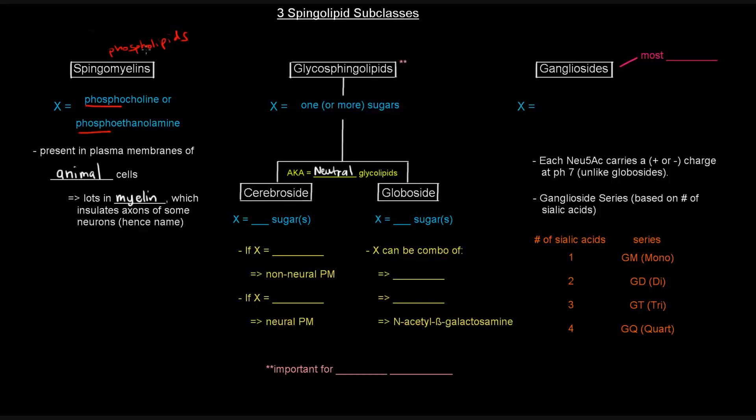So, these glycosphingolipids are going to be also called neutral glycolipids. Sphingomyelins, as you might imagine, because they have that phospholipid, they're not always neutral. Now, this is one or more sugars if the X. So, it's further classified.